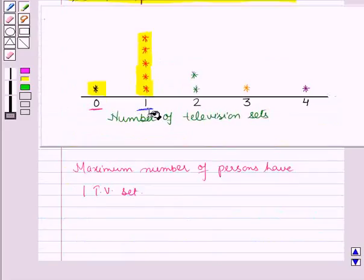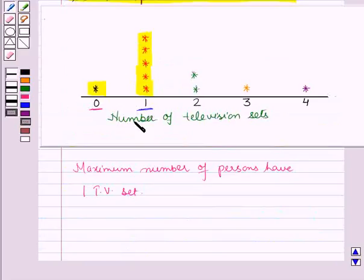Here also you can observe that most of the observations are clustered around the single value 1. Therefore the spread is smaller, that is the spread is not wide.